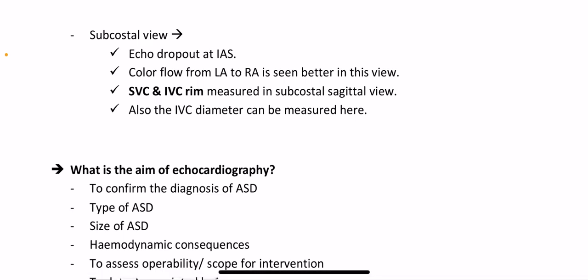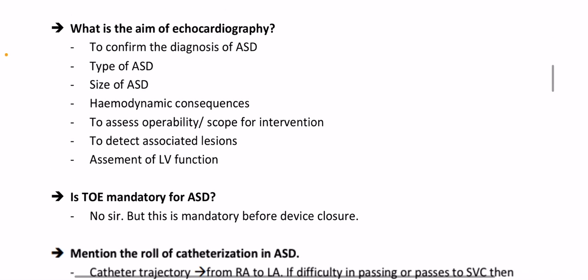Subcostal view: echo dropout at the interatrial septum; color flow from left atrium to right atrium is seen better in this view; superior and inferior vena cava ring measured in subcostal sagittal view; IVC diameter can also be measured here.